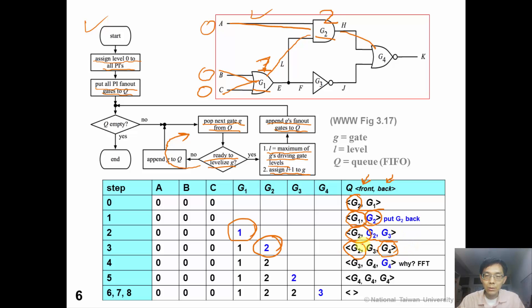Now we pop out G2 again, but the level does not change. Please note that we append G4 again here according to the algorithm, because G4 is G2's fanout gate. So why do we need this G4 again? This is an interesting question. Please see our FFT.